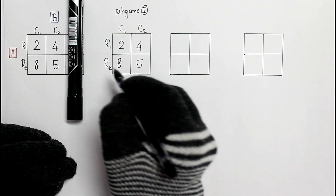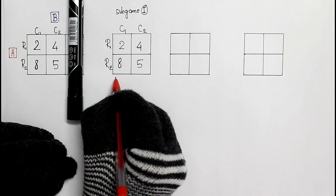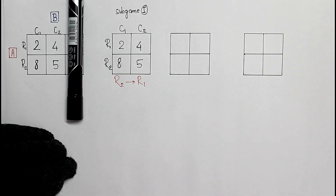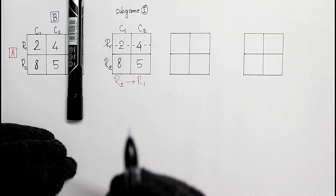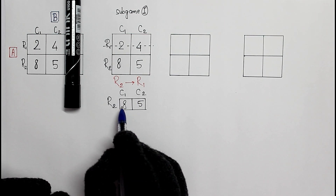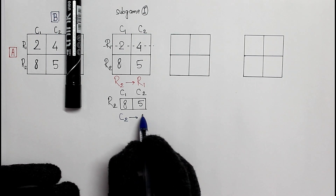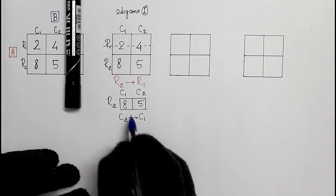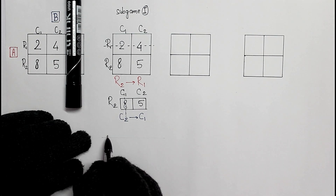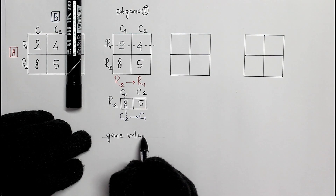Between R2 and R1, 8 is greater than 2 and 5 is greater than 4. So the second row is dominating the first row and the first row is cancelled. Between C2 and C1, 5 is less than 8, so column C2 is dominating C1 and C1 is cancelled. The only payoff value remaining is our game value for sub game 1: 5.